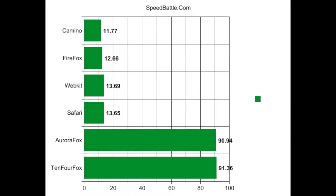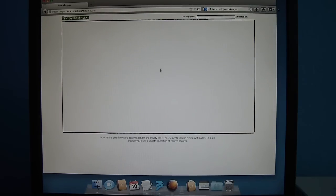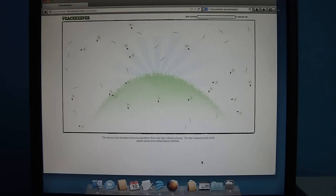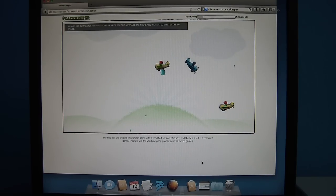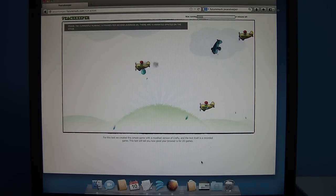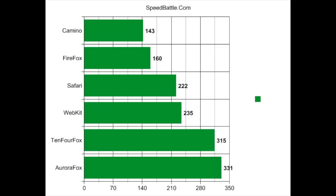The speedbattle results are very similar — in this case, the higher number is the better performer. The obsolete Firefox still comes in last, with 104Fox just inching out as the winner. The Peacekeeper test was far more interesting as it shows a variety of tests on screen. You could actually visually see the differences between one browser and the next, and the winner was clear just by watching the test without even seeing the results.